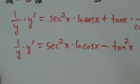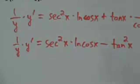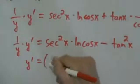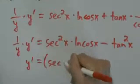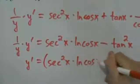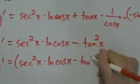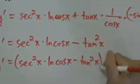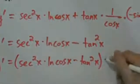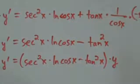That simplifies nicely. Now we just multiply both sides by y. So y prime equals secant squared of x times natural log of cosine of x minus tangent squared of x — parentheses around everything — all multiplied by y. But we're not done yet; we have to substitute back.